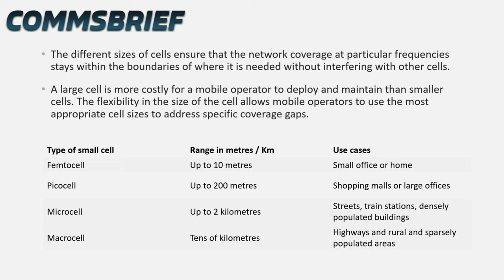A pico cell has a range of up to 200 meters — slightly bigger than the femto cell — and it can be used in shopping malls or large offices. The next one after pico cell is a micro cell. A micro cell has a range of up to 2 kilometers and it can be used in places like streets, train stations, and densely populated buildings.